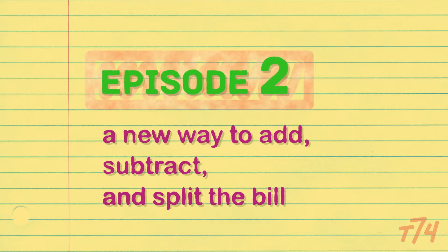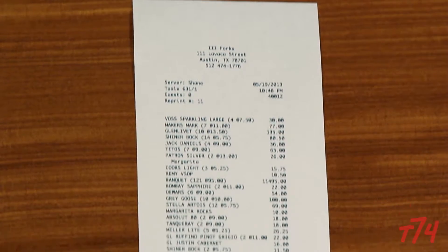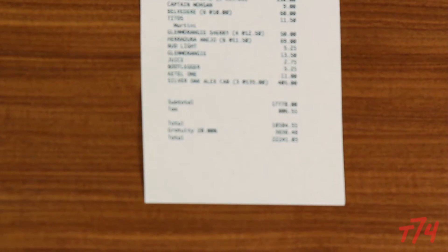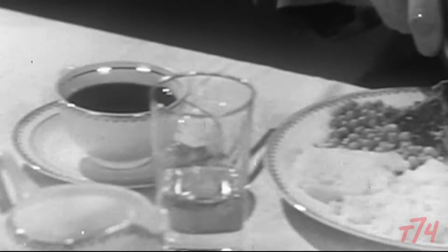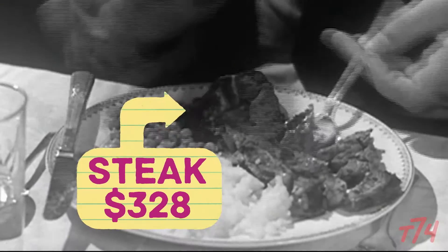In this episode of Math 2.0, we learn Common Core addition and subtraction through trial by fire: the restaurant check. Our Common Core math expert is here to help us break this down. So let's say our steak was $328.